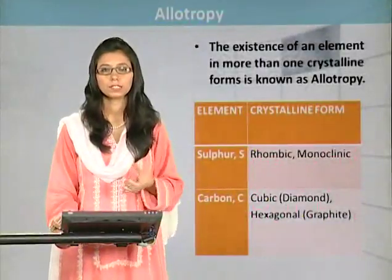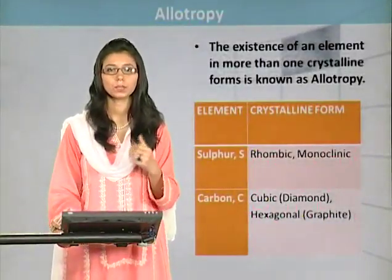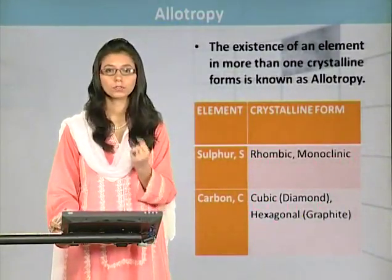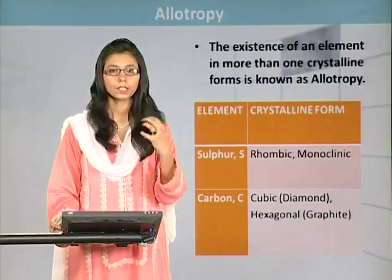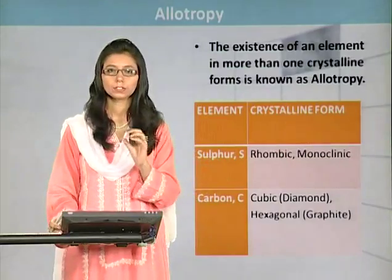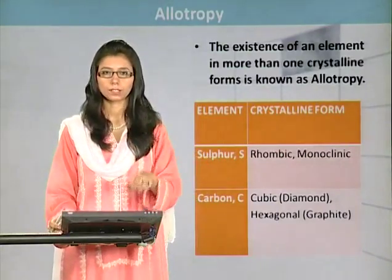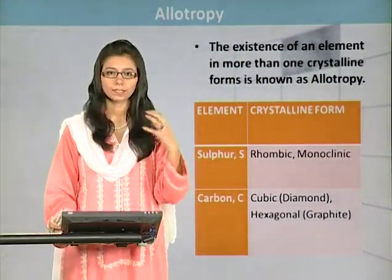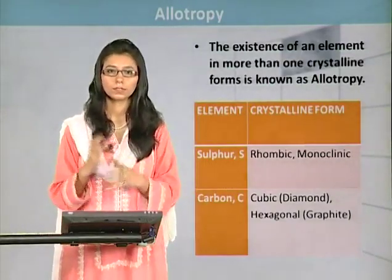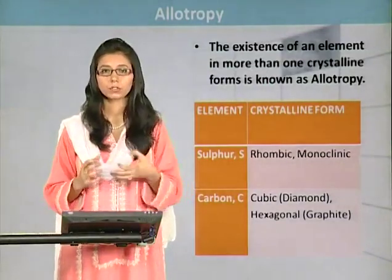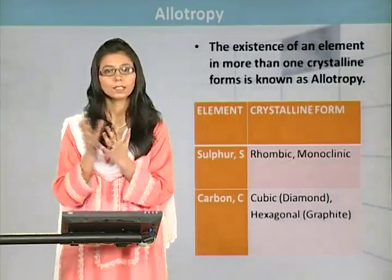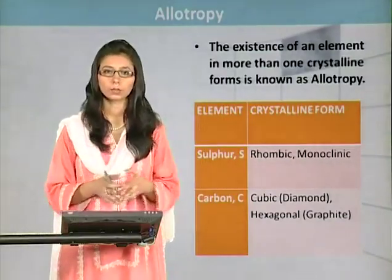Allotropy. When we studied crystalline solid properties, we discussed polymorphism. In polymorphism, we concerned that it is a compound that is available in different crystalline forms. But when we talk about element level — that an element exists in solid state but has different crystalline forms — when we discuss this phenomenon, we will classify it as allotropes. And we will call this phenomenon as allotropy.